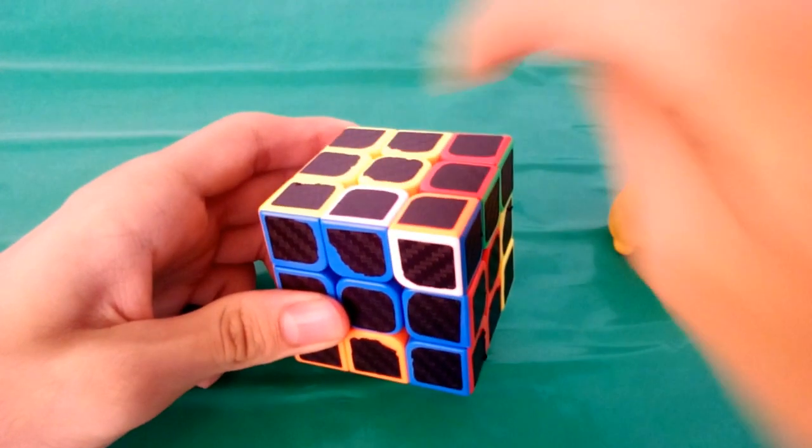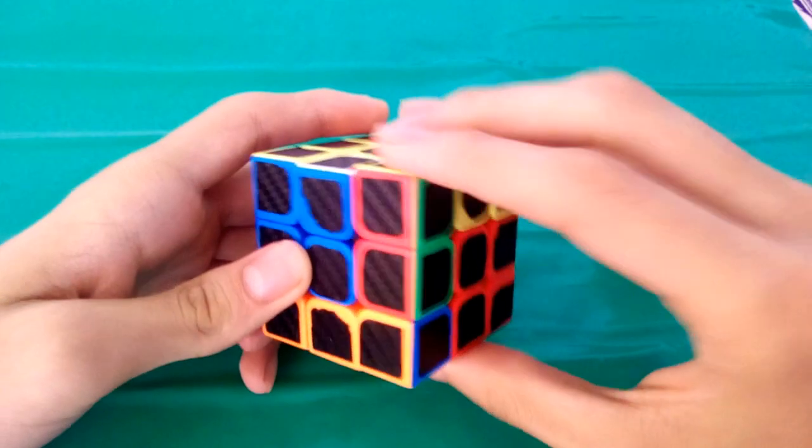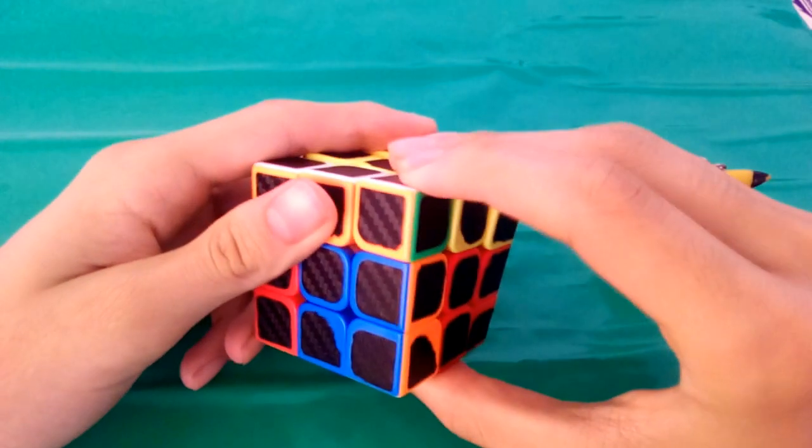Do once more this upper move, go down with this right layer and do a double move on the front layer.